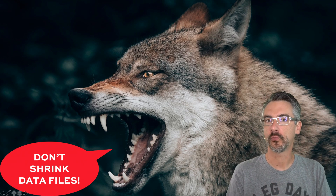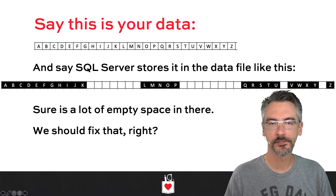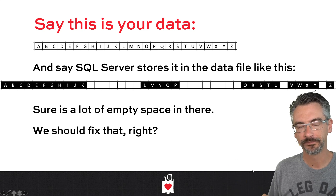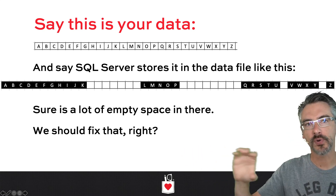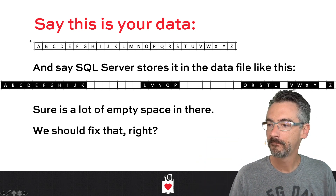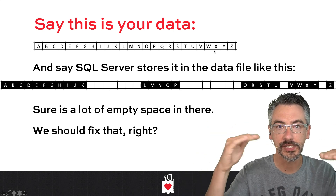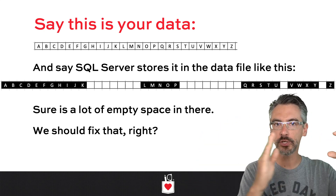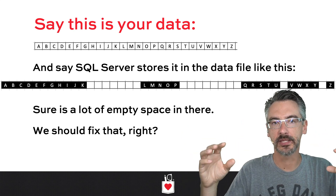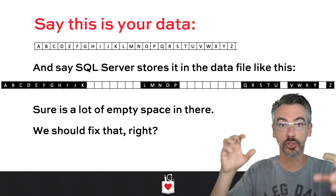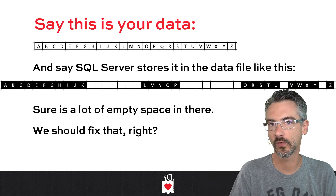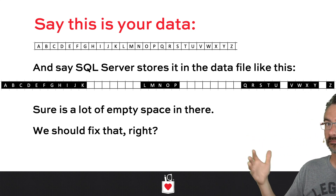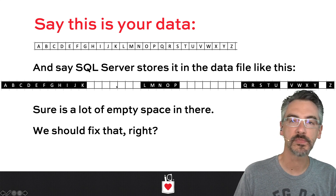I'm going to tackle this in a few different ways. First, I'm going to talk about shrinking data files. Let's say that your data consists of the alphabet, A through Z. You've laid it all out on disk and it's perfectly packed in nice and tight — all crammed in A through Z. But that's not how SQL Server databases work. It's one file with a whole bunch of pages in it, and we're going to have some empty space inside there, depending on whether people have been inserting data, deleting data, dropping tables, creating new tables, rebuilding things, and so forth.